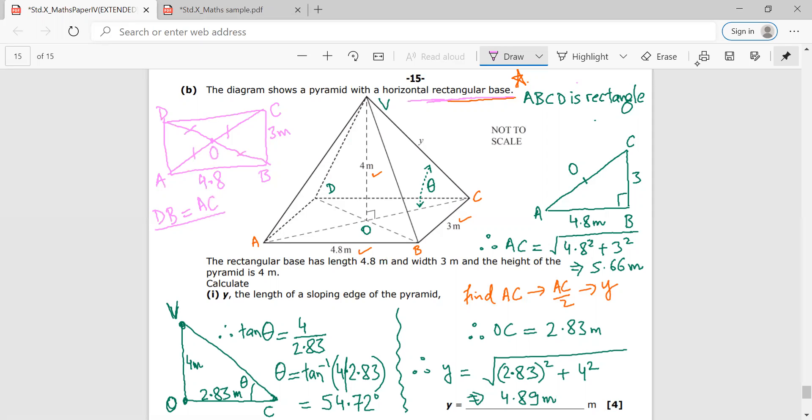No sir. So AO would be equal to OB would be equal to OC would be equal to OD. Now, this is what we should understand from basic geometry. And once we are clear about this,